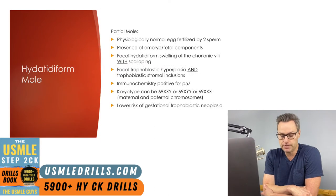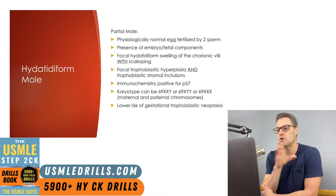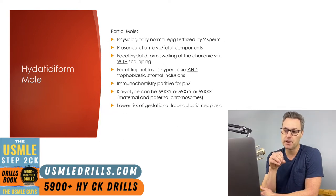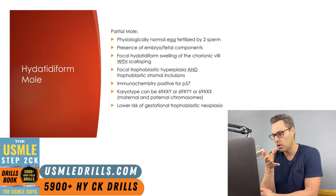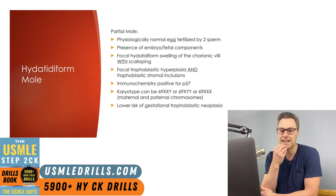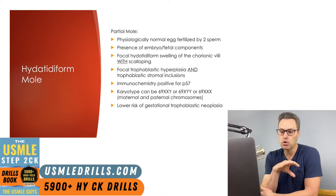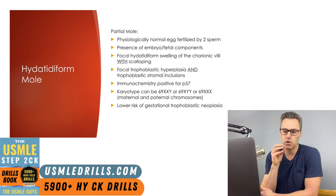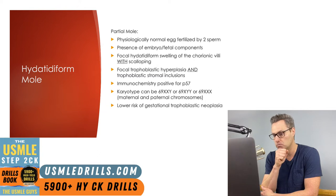The other type is our partial molar pregnancy. This occurs when a normal egg is fertilized by two sperm. There will be the presence of embryo and fetal components, as well as hydatidiform swelling of the chorionic villi and trophoblastic hyperplasia. But both the swelling and the hyperplasia will be focal rather than diffuse. There will also be scalloping of chorionic villi and trophoblastic stromal inclusions in the partial mole, which won't be present in the complete mole.